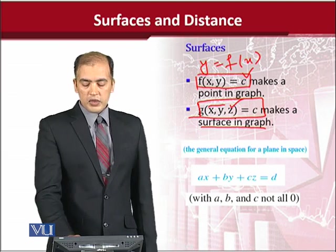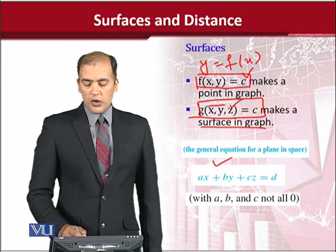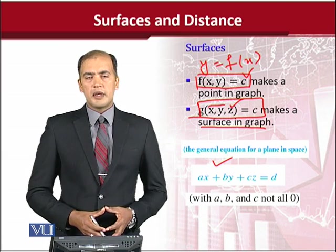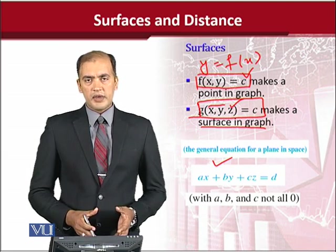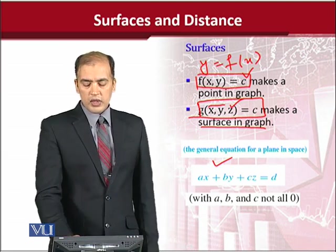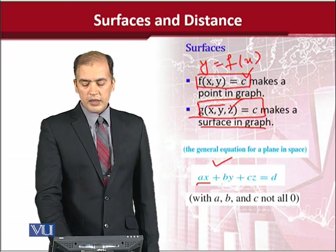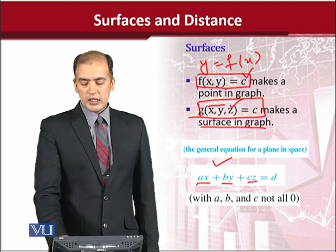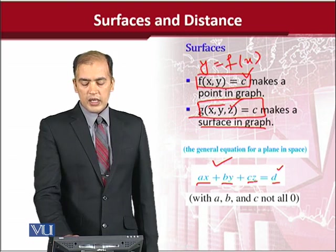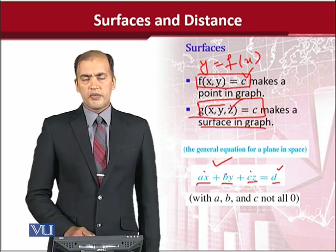But before we go there, we should remember the standard form of having a plane in the space, that is a surface. And it should look like this: Ax plus By plus Cz is equal to D. D is a constant. A, B, C, these are some coefficients.